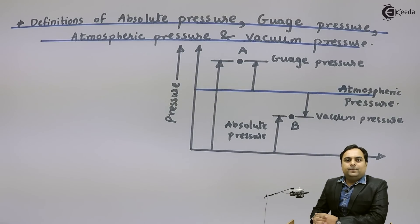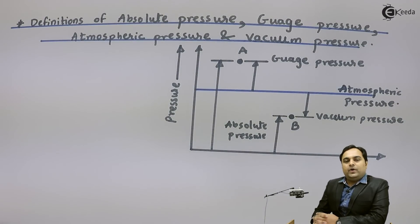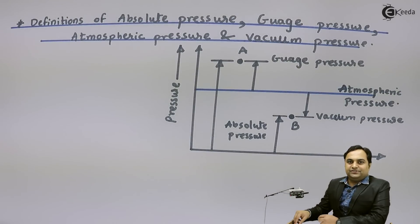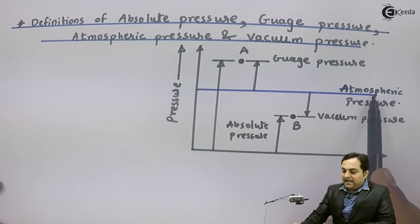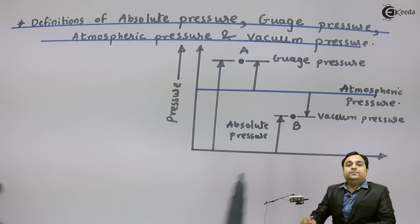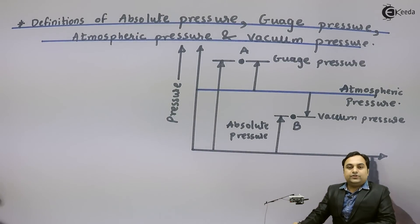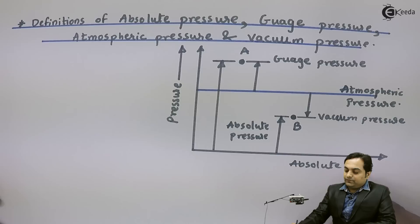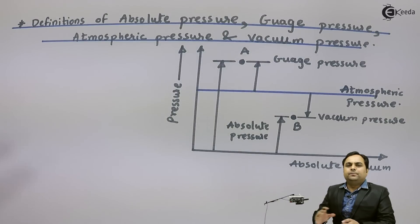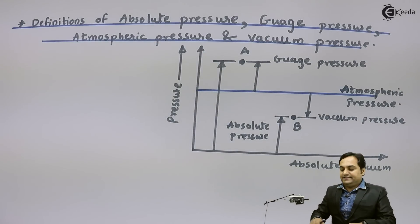Hello friends, in this video we will see the definitions of absolute pressure, gauge pressure, and vacuum pressure. For that purpose, we have a diagram here. The blue line is marked as atmospheric pressure — the pressure of the atmosphere around us. The horizontal line at the bottom indicates absolute vacuum, a complete vacuum where no pressure is exerted.